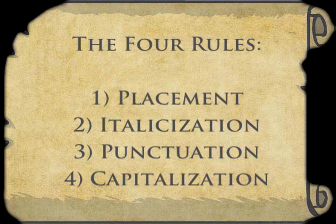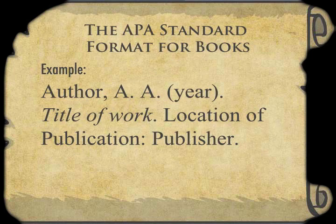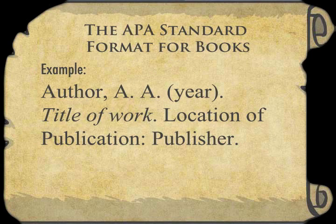First, remember the four rules: placement, italicization, punctuation, and capitalization. I remember those! An APA book reference only contains five parts: author, year, title of book, location of publisher, and the publisher name. Although small, it may provide you a bigger chance of getting it wrong. Got it!